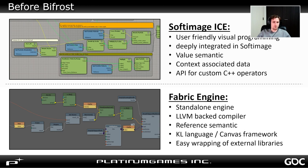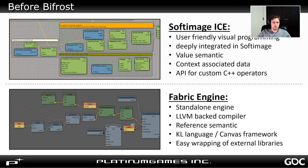After Softimage went off-license, I switched to Fabric Engine. Fabric was a standalone engine based around the KL language. Users would write KL code or use Canvas, which was Fabric's visual programming framework, in order to build fast multi-threaded tools and applications. Fabric was integrated into all major DCCs and also Unreal Engine. It was also shipped with extra tools like Kraken, which was a popular cross-DCC rigging framework.